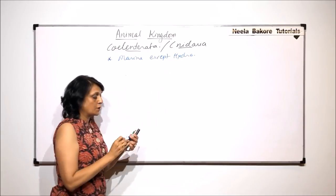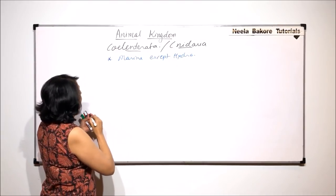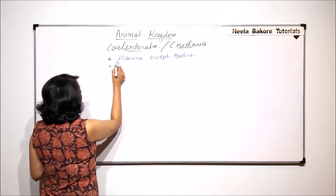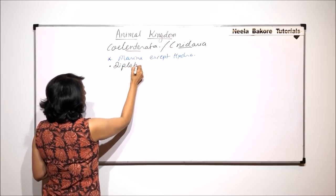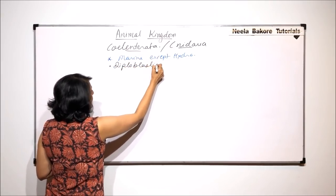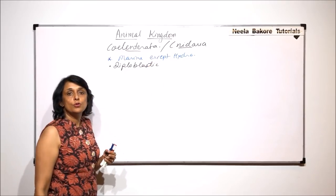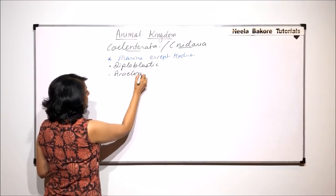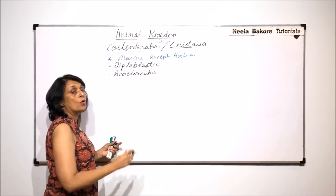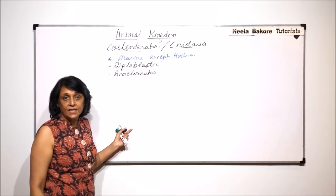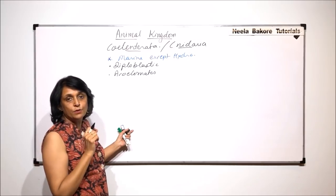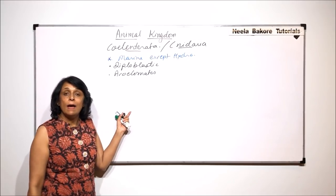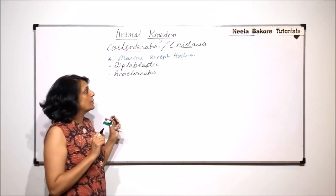These coelenterates are diploblastic. That means the body develops from two germ layers. They are acoelomates. There is no body cavity as such, that is the real cavity we are talking of. But they do have a cavity which is known as coelenteron.